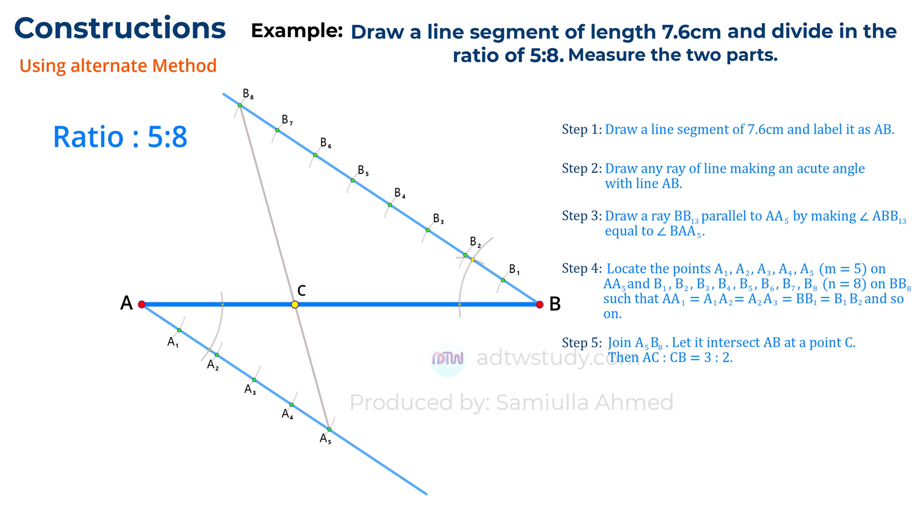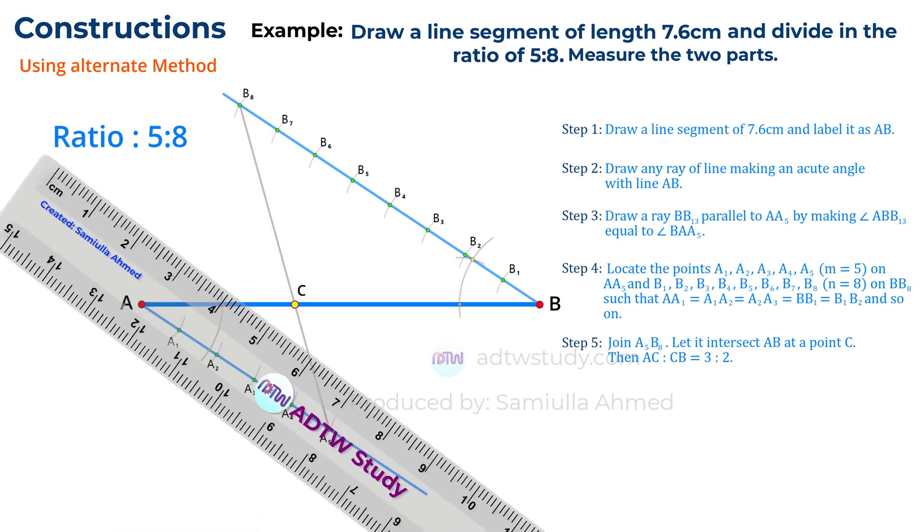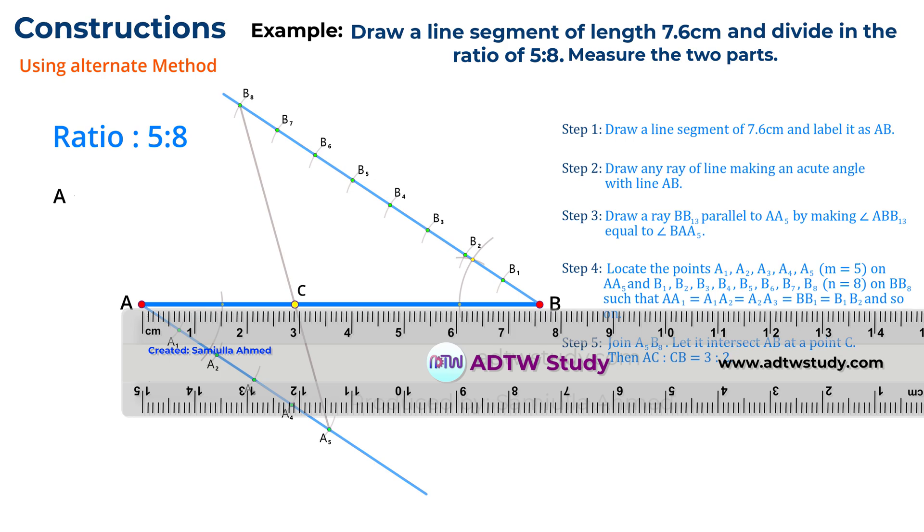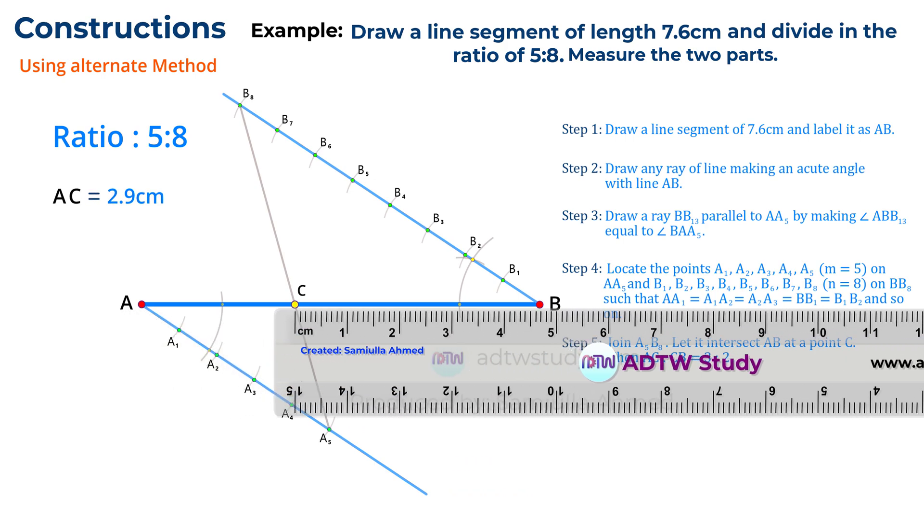Next, we need to measure the lengths of AC and CB. Take a ruler and measure both parts. The length of AC will be approximately 2.9 cm, while the length of CB will be around 4.7 cm.